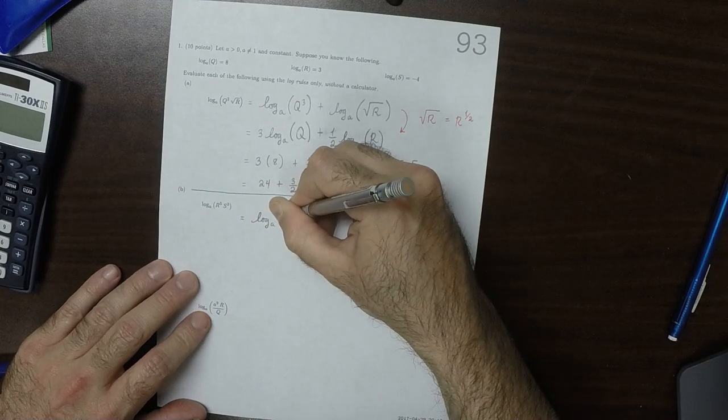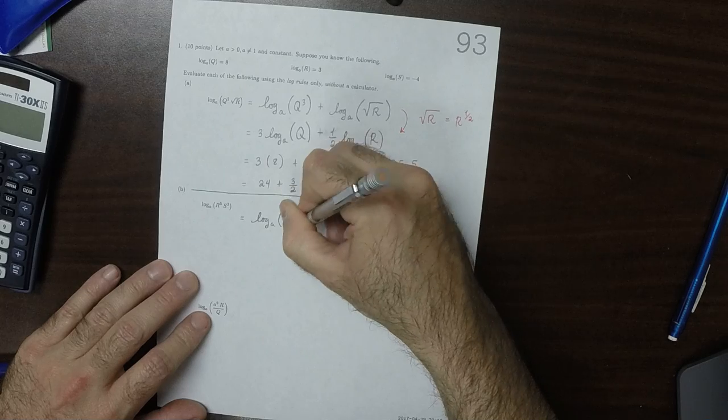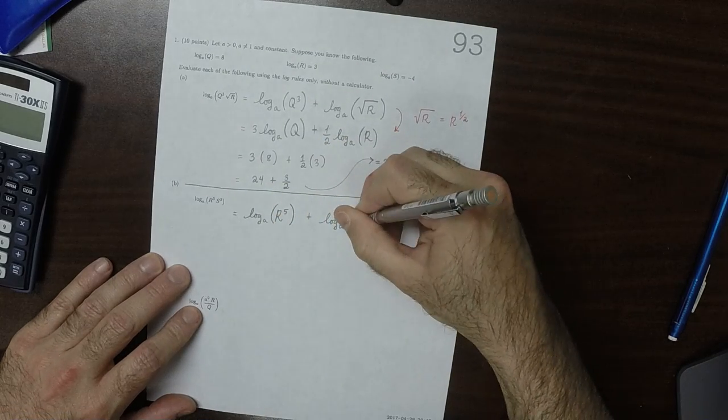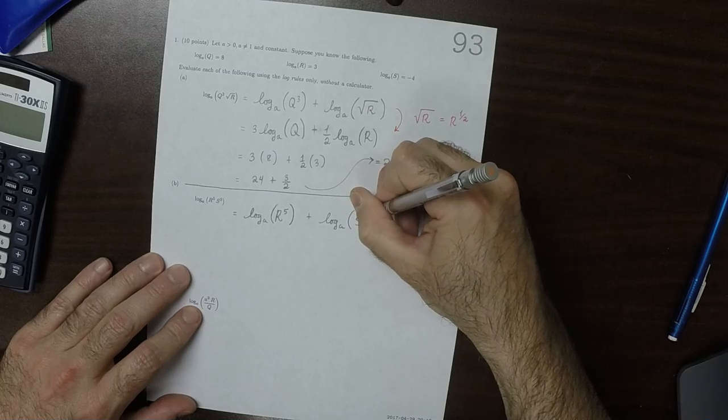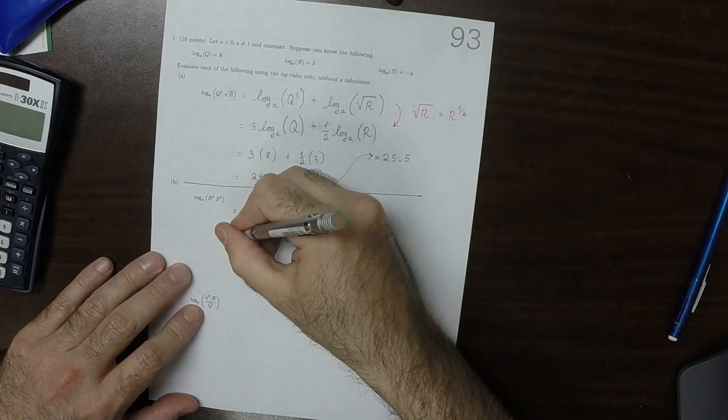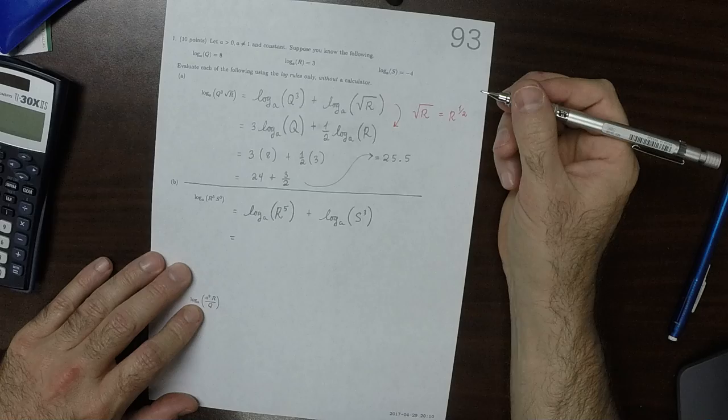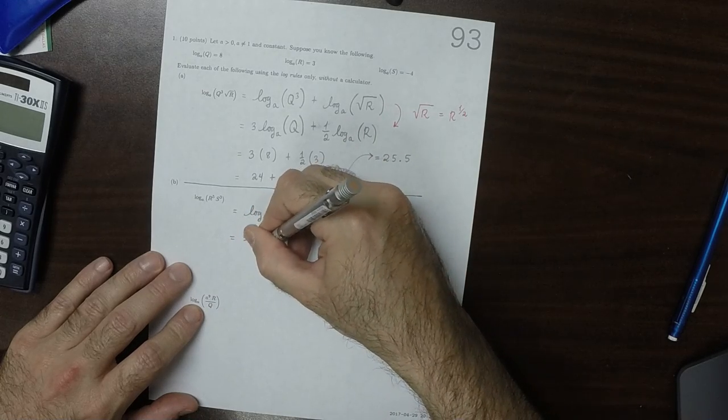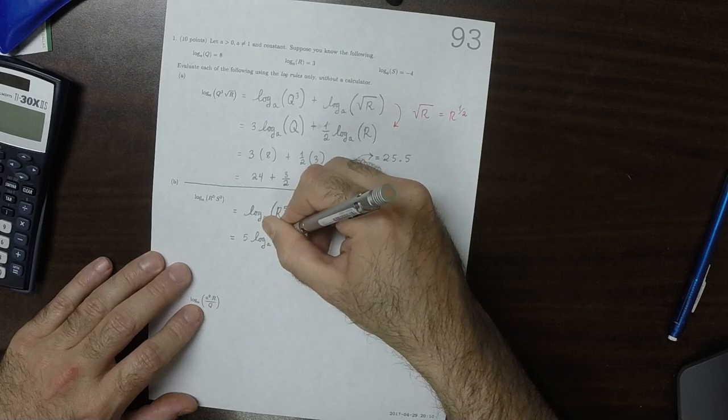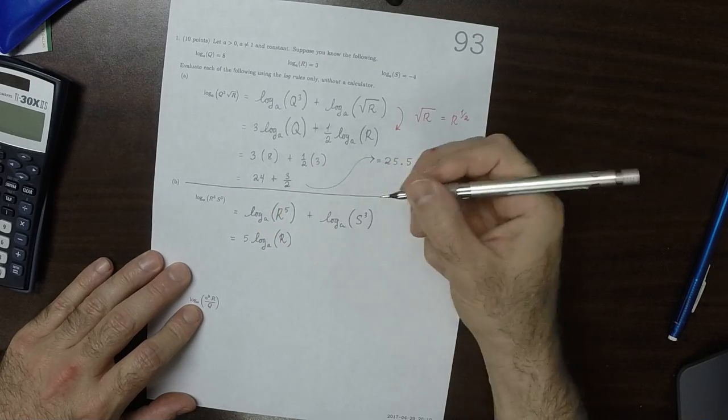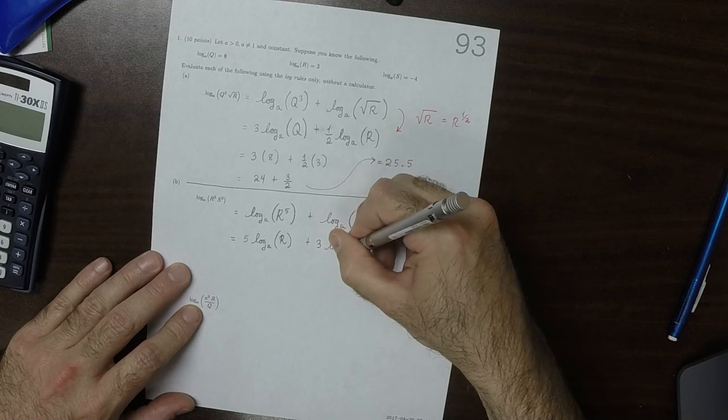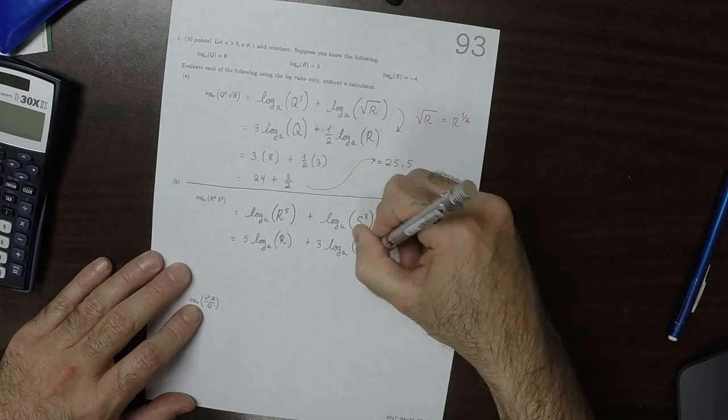Log base a of r to 5 plus log base a of s to 3 is 5 log base a of r plus 3 log base a of r to log base a of s.